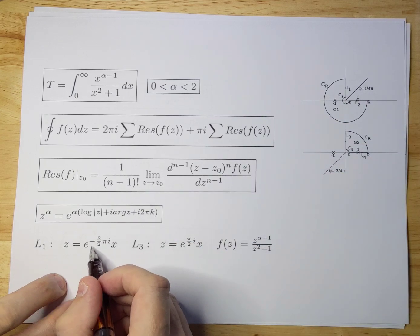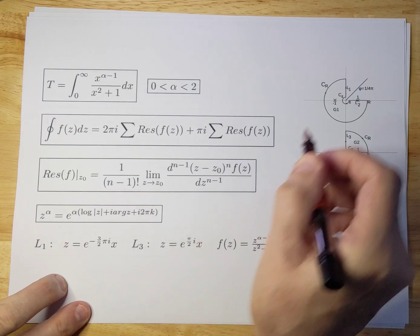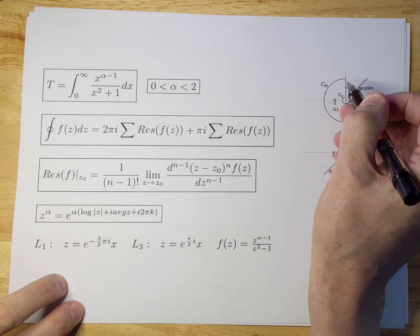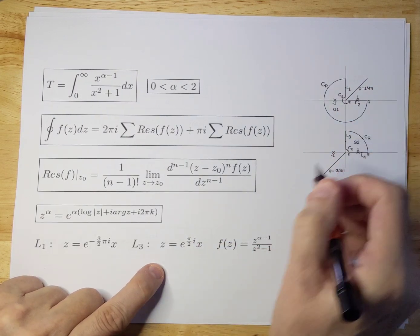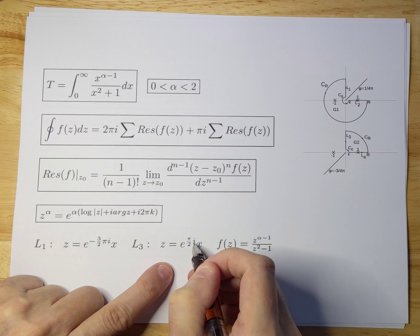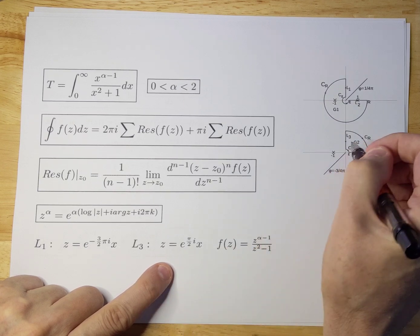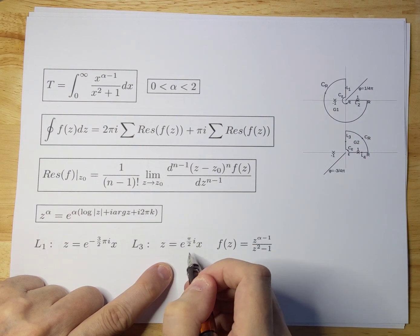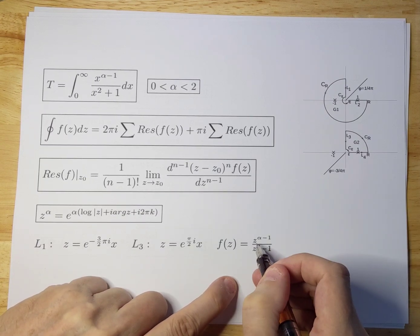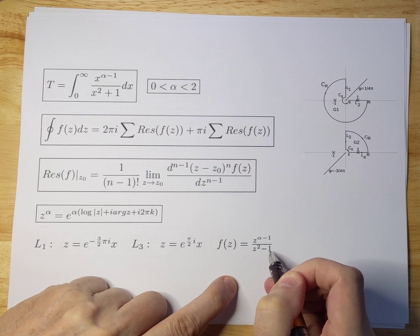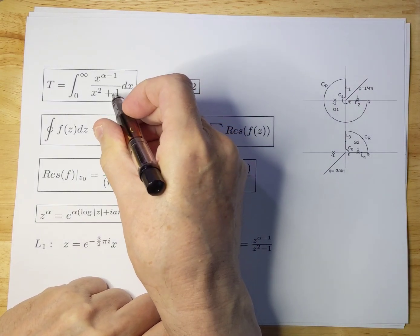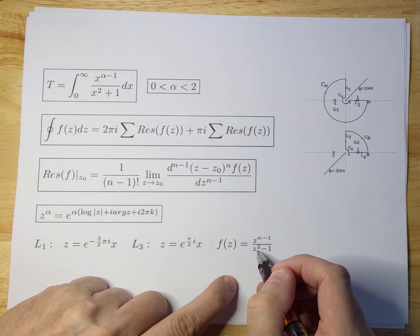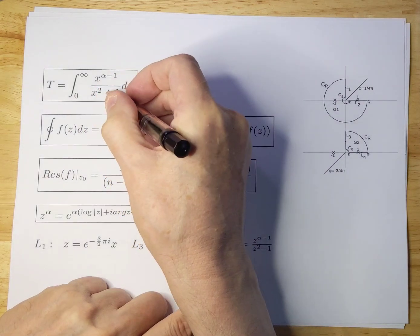With L1 you have minus three-halves pi·i times x when you go over this path — that is what z is on that path. On L3 you have e to the (pi/2)·i times x, because there it's positive pi over two — that is what c is on that path. And as stated, f(c) equals c to the (alpha minus one) over c squared minus one, instead of plus one for the integral we're interested in. We will see that it works out because at i·pi/2, another minus is introduced and you get x squared plus one as a result.